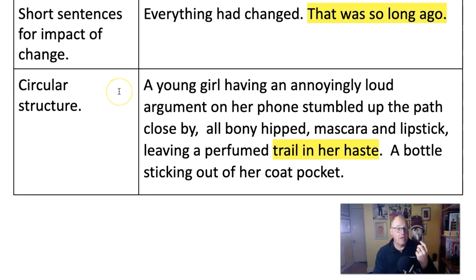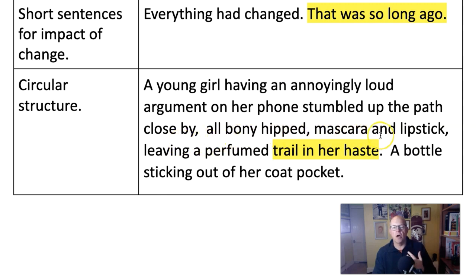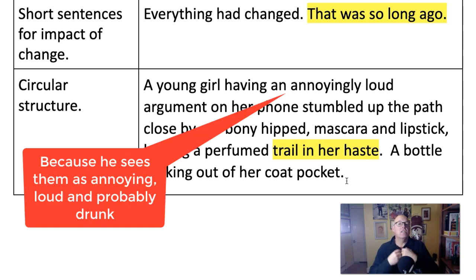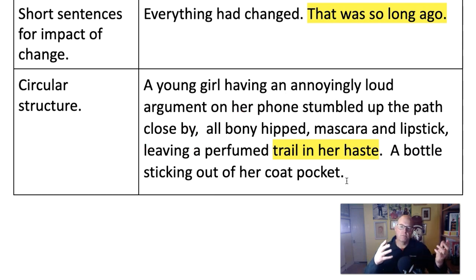We go back to that image of the girl with the vodka bottle coming down the aisle in the bus. Now he looks out of the window. 'A young girl having an annoyingly loud argument on her phone stumbled up the path close by, all bony-hipped mascara and lipstick, leaving a perfumed trail in her haste, a bottle sticking out of her coat.' There are subtle differences in the description so that we know it's a different girl. But the fact that he's seeing young girls appearing the same way gives us this idea of his cynicism and his disillusionment, which comes from his memories.